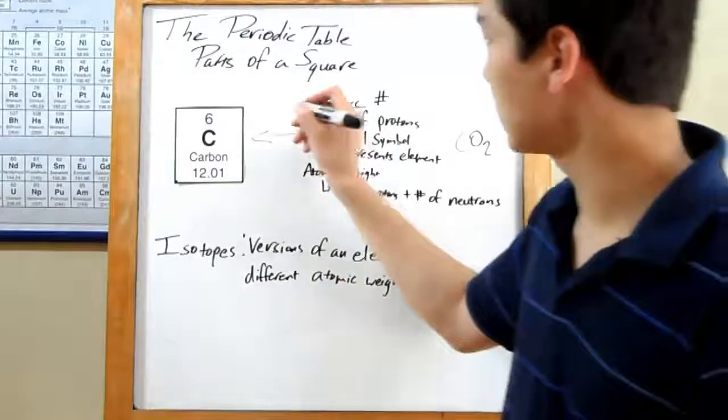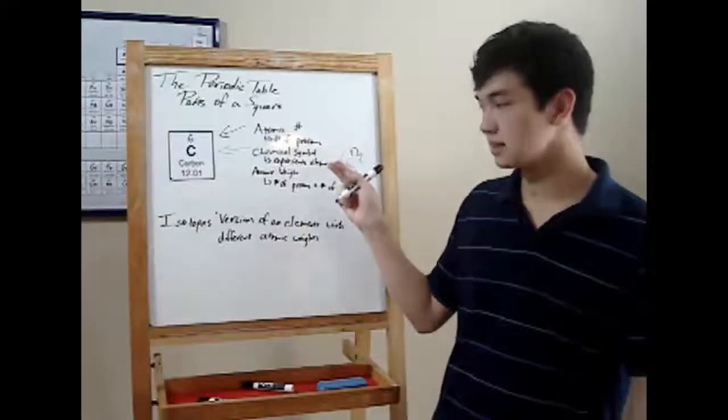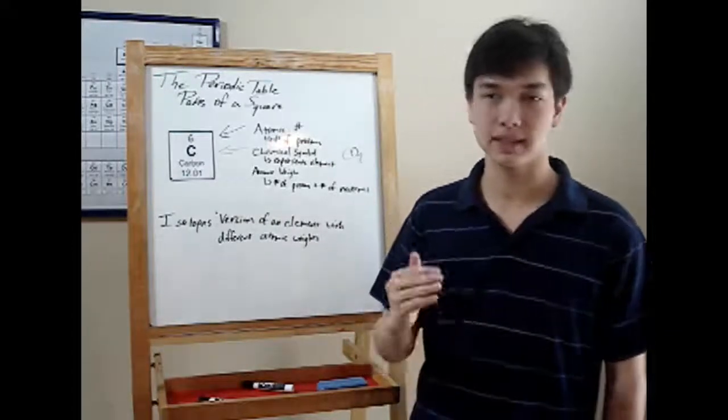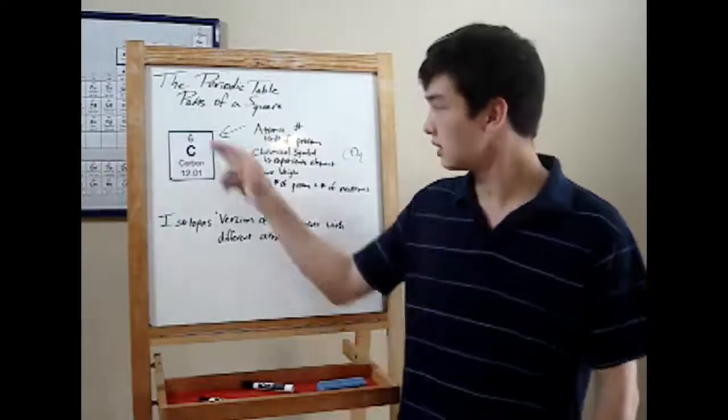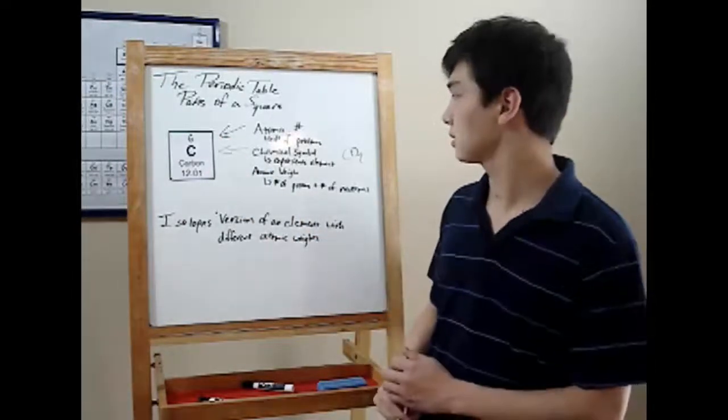Next up is the atomic number. That's the number on top. In this case, it's six. That's the number of protons you can find in your element. The number of protons will stay the same for every element because it determines the element's properties. Carbon will always have six protons. Nitrogen will always have seven. So on and so forth.